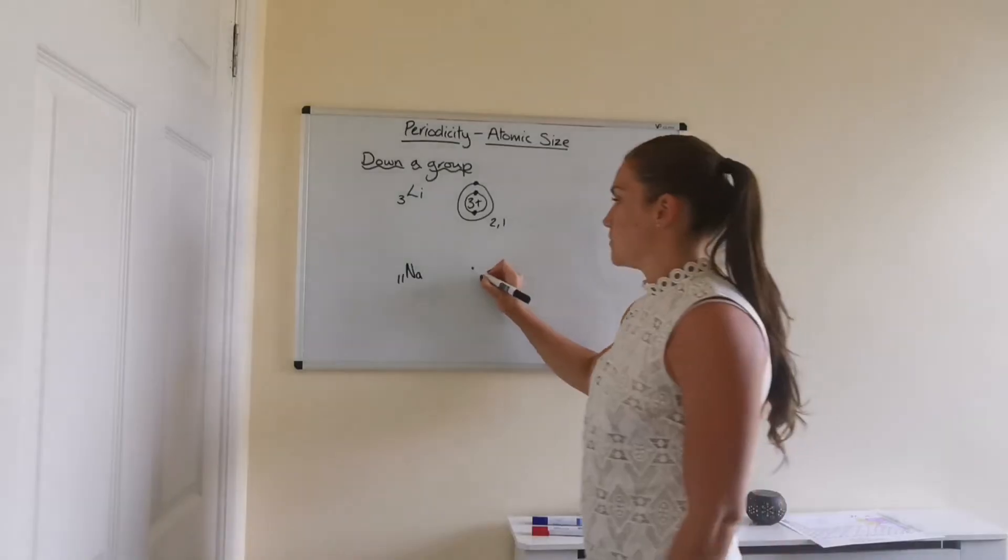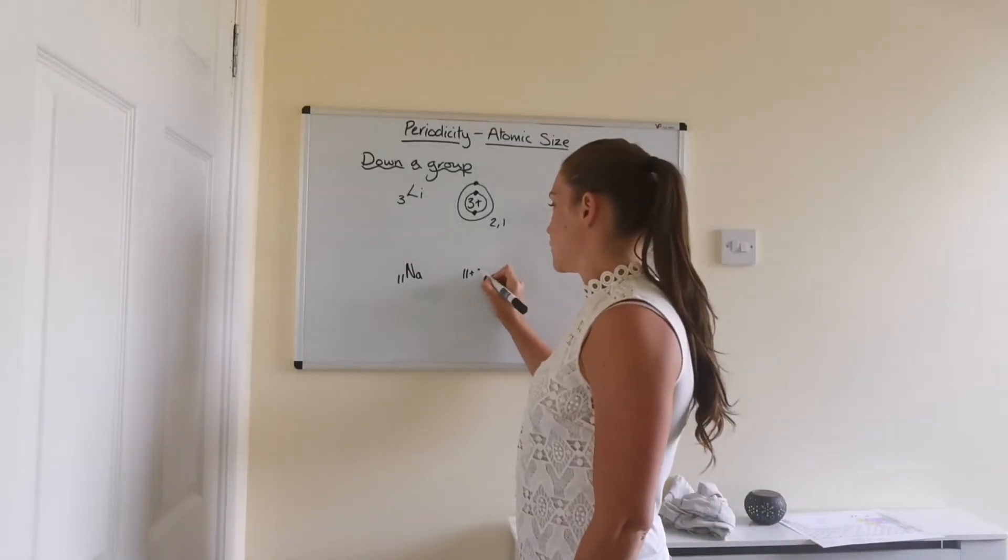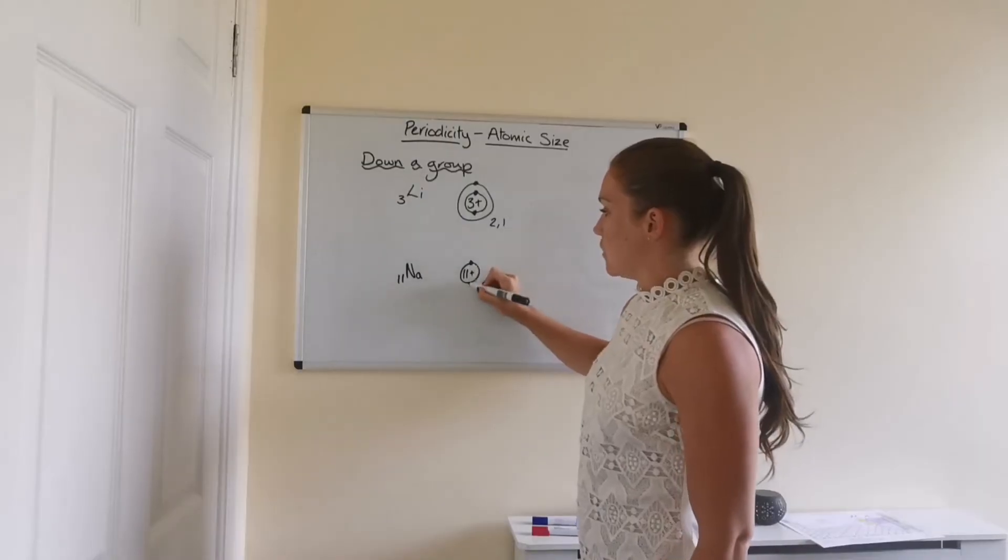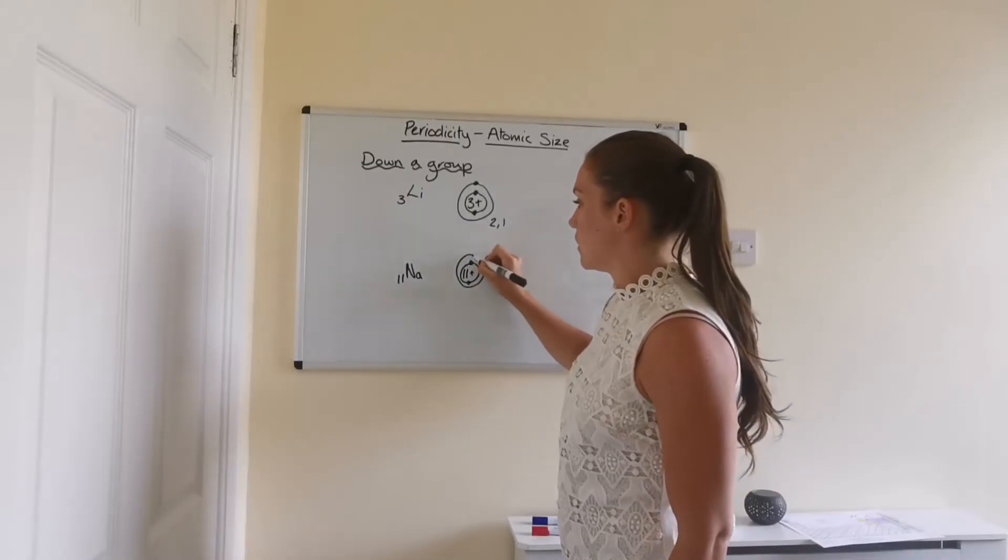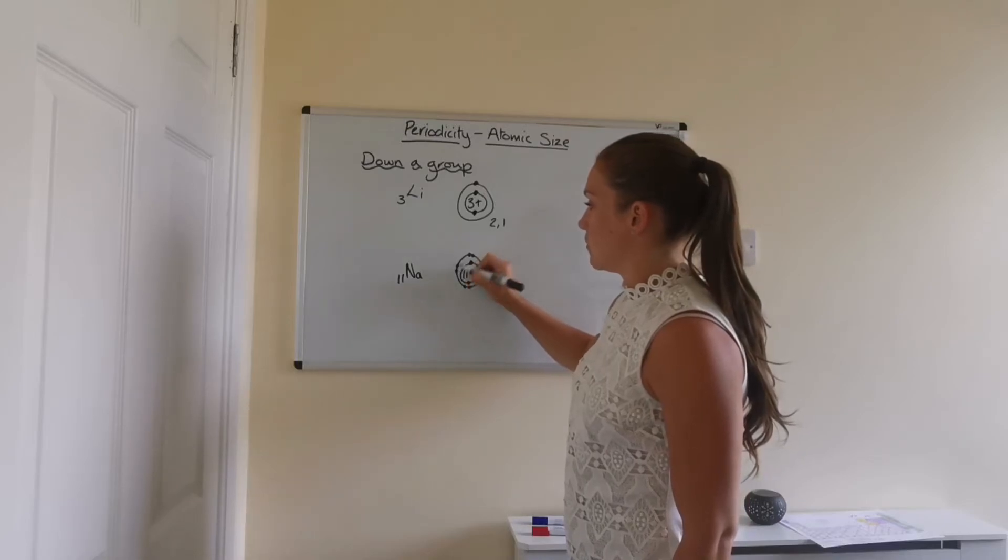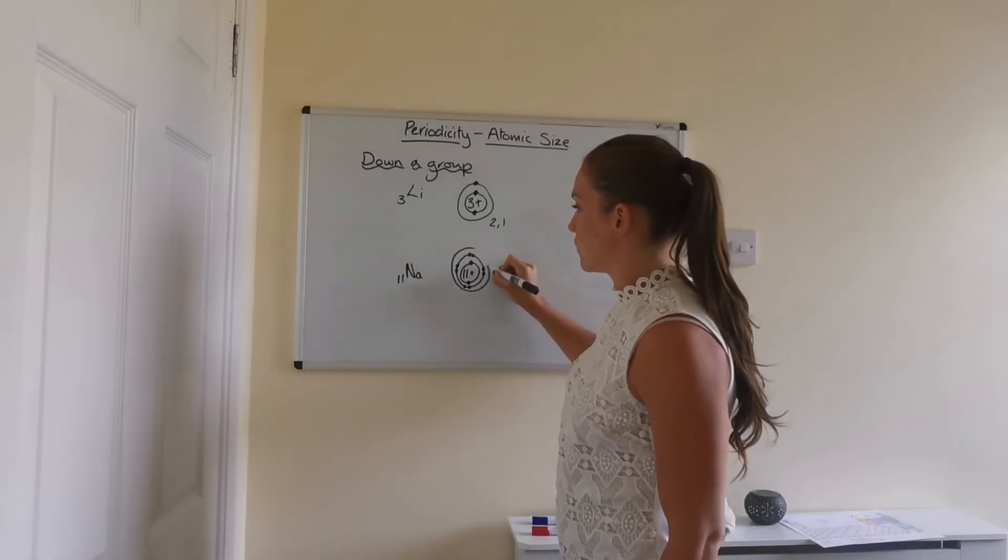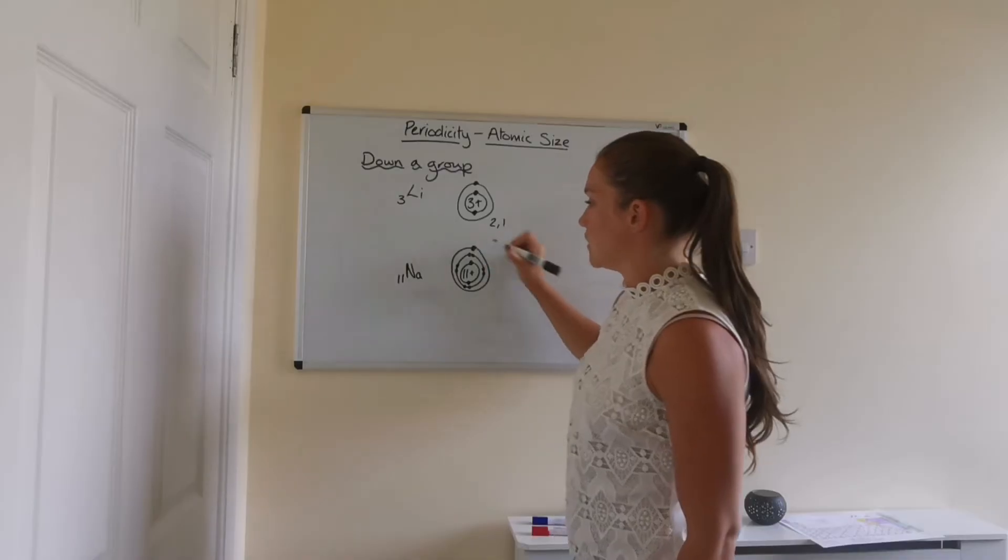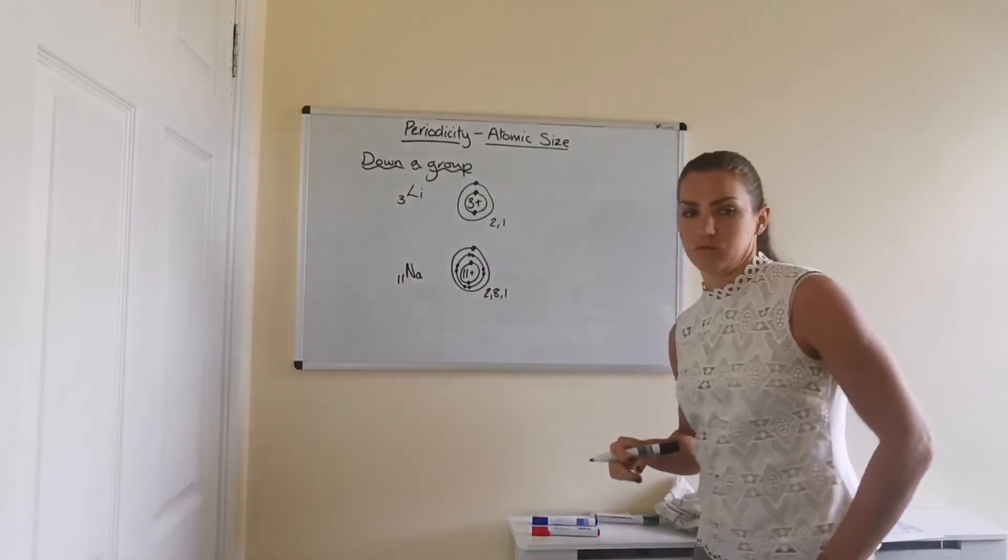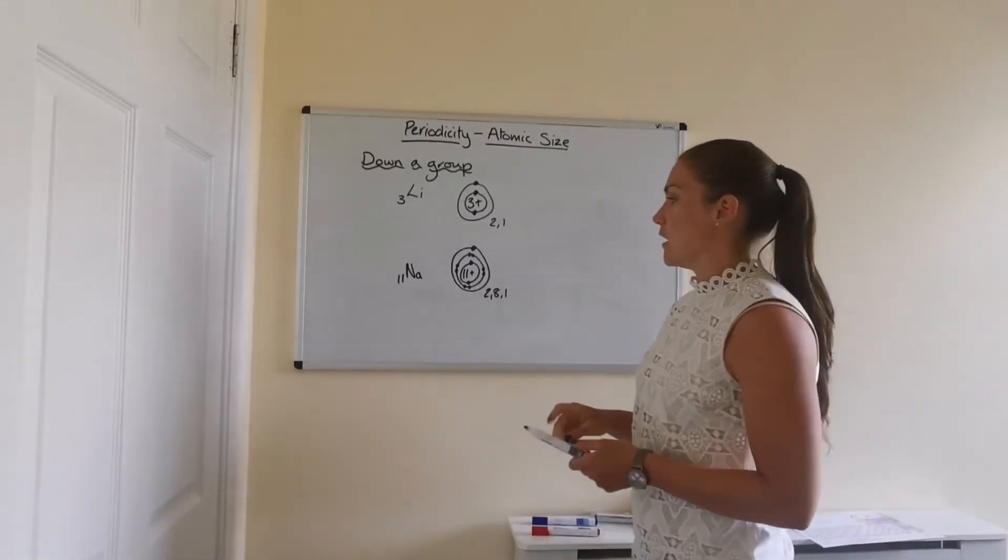And then sodium, it's got an 11 positive charge in the middle because it's got atomic number 11. And then its electron arrangement is 2, 8, 1. Just remember, you'll get the electron arrangements in the data booklet on one of the pages.